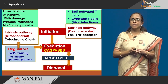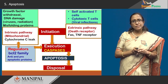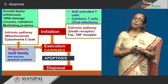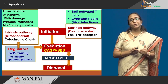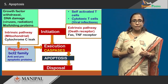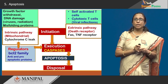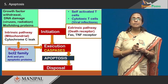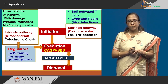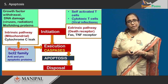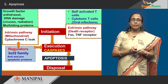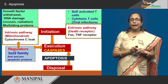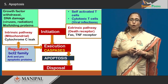In the extrinsic pathway, either the FAS receptor or the TNF (tumor necrosis factor) receptor are involved. In the intrinsic pathway, the mitochondria is the main area where these changes happen. The main change is the cytochrome C leak. Regulators from the BCL2 family regulate this process of mitochondrial initiation, and then it goes on to the stage of execution.